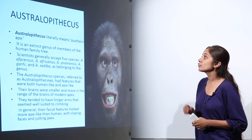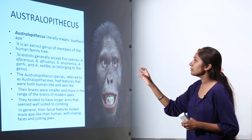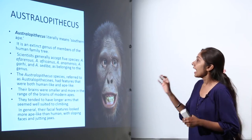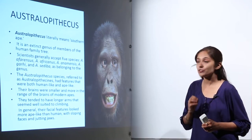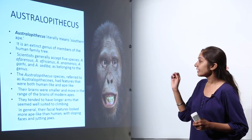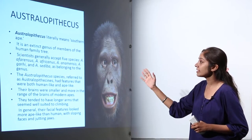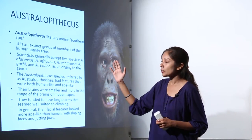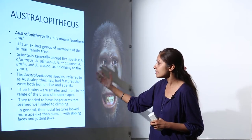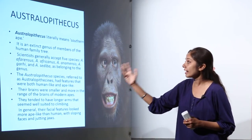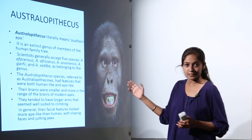Next we have Australopithecus. Australopithecus literally means 'southern ape,' and it is an extinct genus of members of the human family tree. Scientists generally accept 5 species of Australopithecus: Australopithecus afarensis, Australopithecus africanus, Australopithecus anamensis, Australopithecus garhii, and Australopithecus sediba, all belonging to this genus.